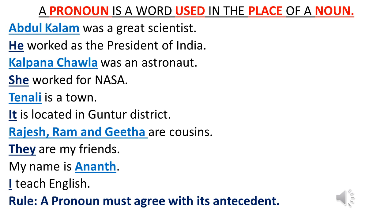Let's look at some examples. 'Abdul Kalam was a great scientist. He worked as the President of India.' Here, in the first sentence, Abdul Kalam is the noun. In the second sentence, we also talk about Abdul Kalam, but instead of repeating his name, we use the word 'he' — that is the pronoun.